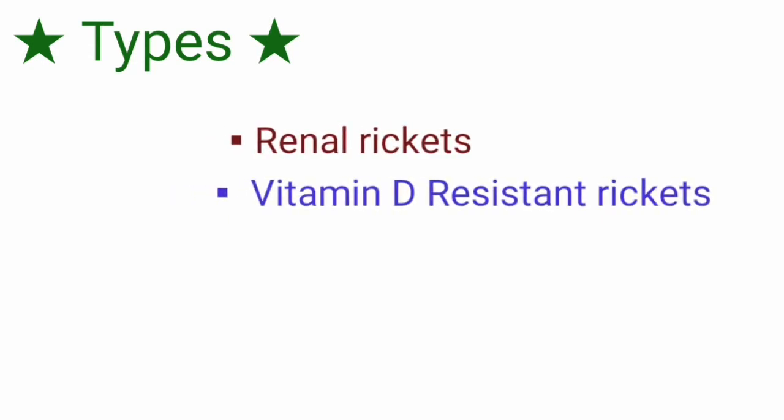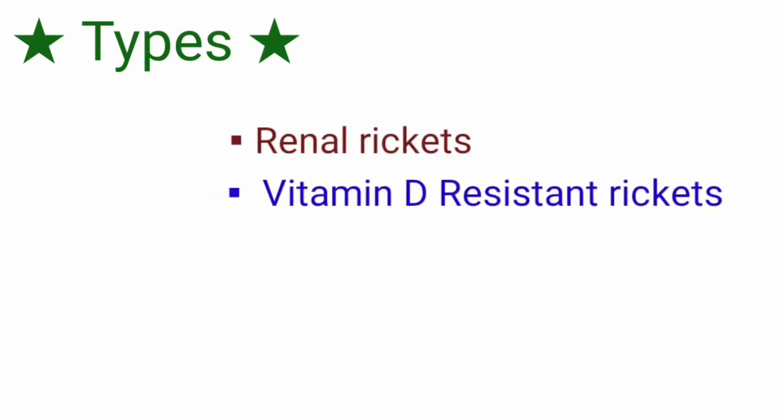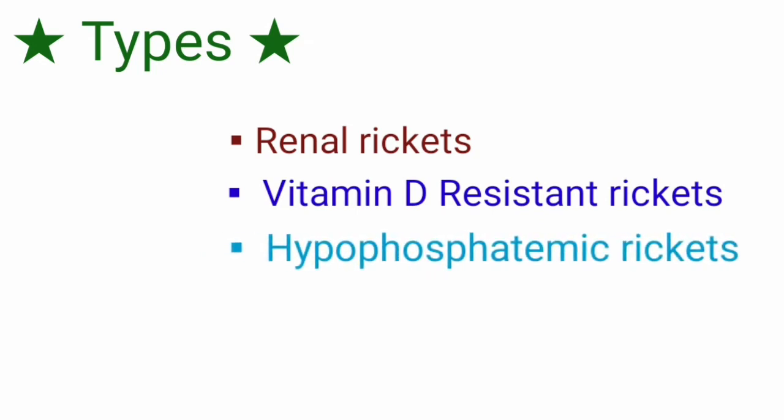Coming to types of rickets. Apart from classical rickets, there are different types such as renal rickets, vitamin D resistant rickets, and hypophosphatemic rickets.